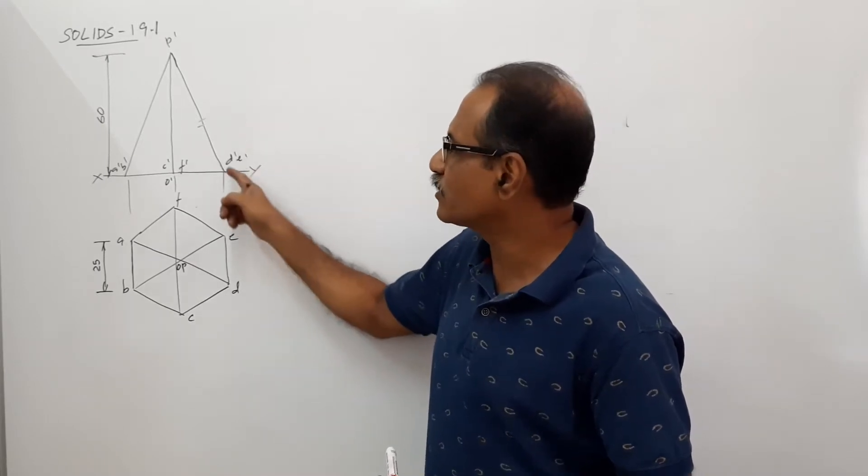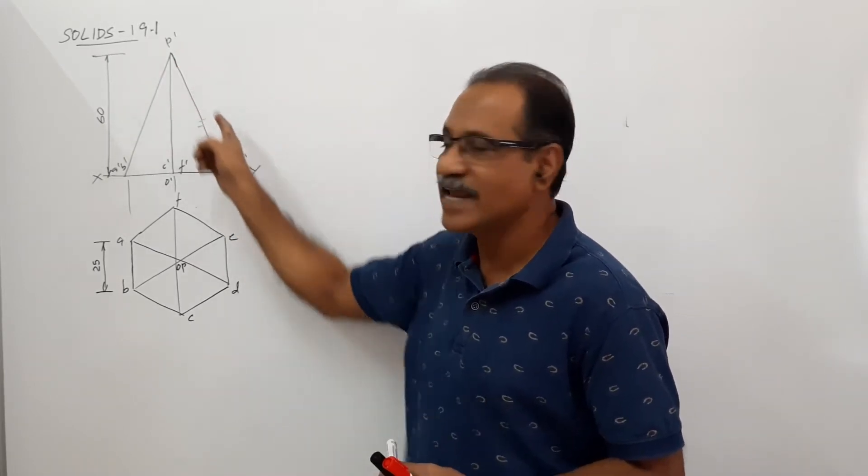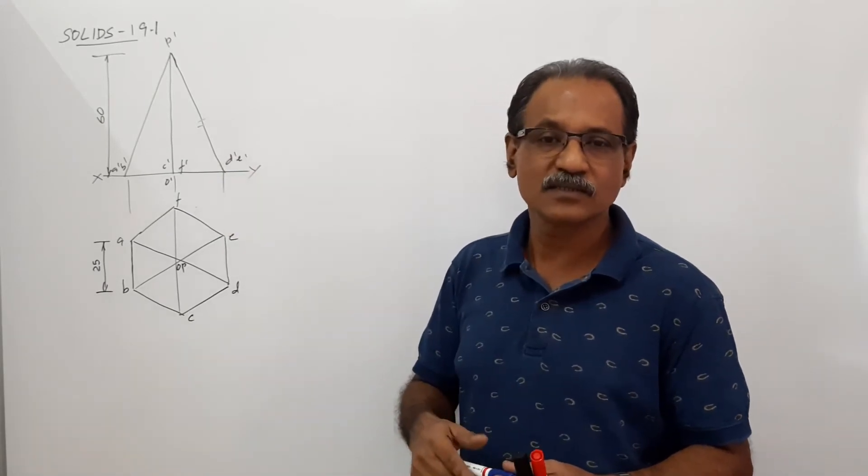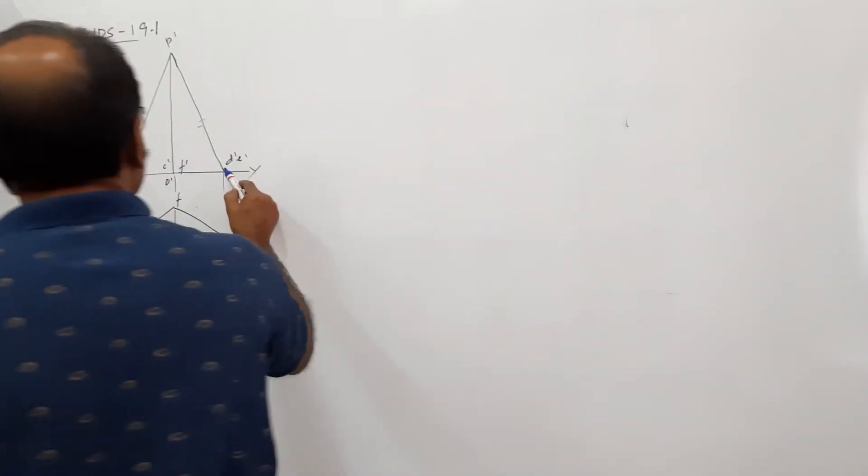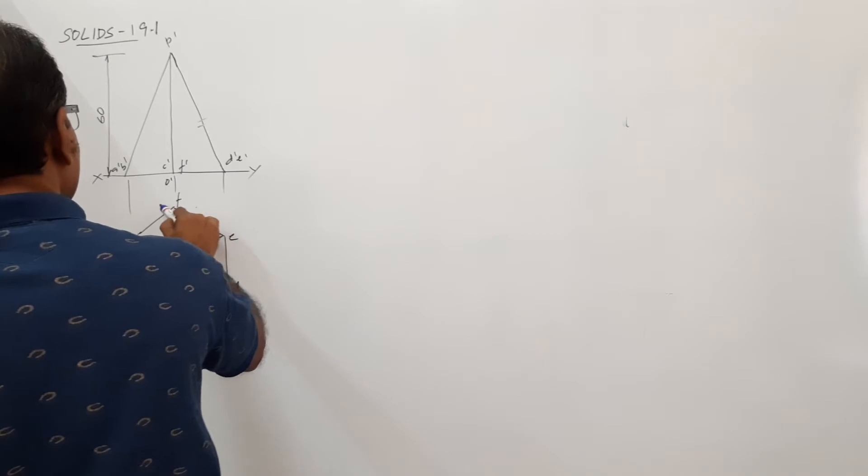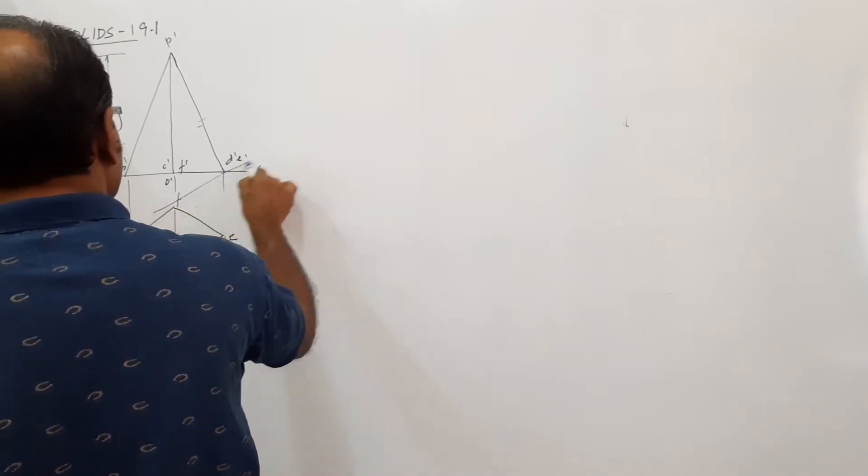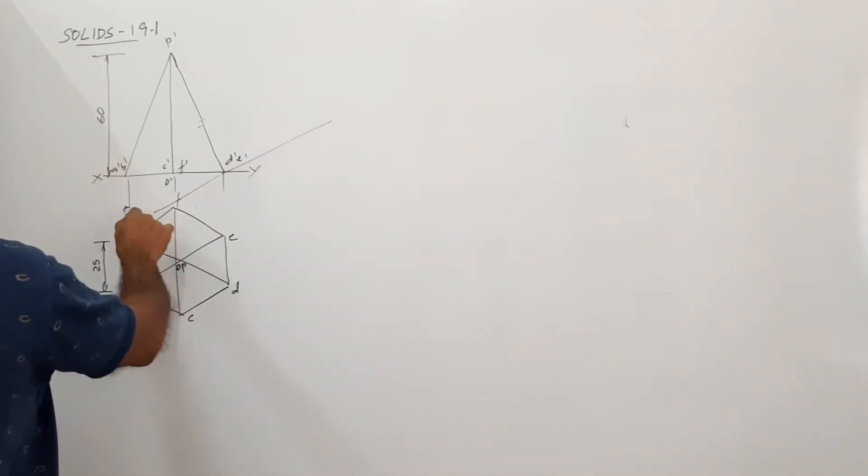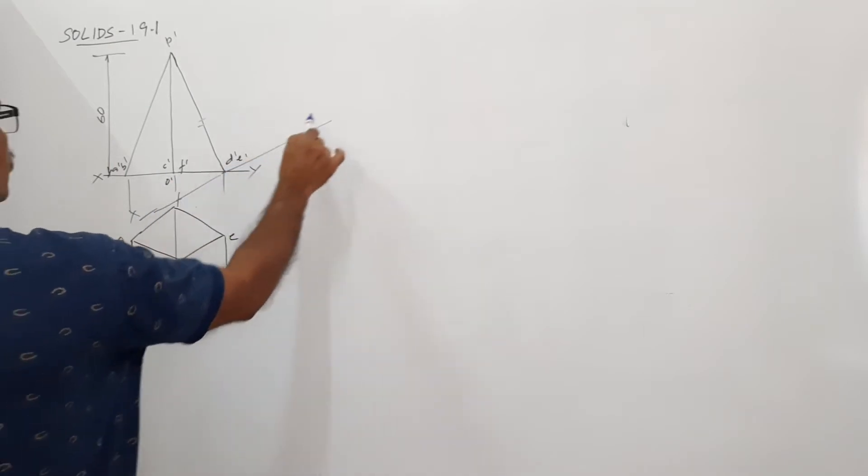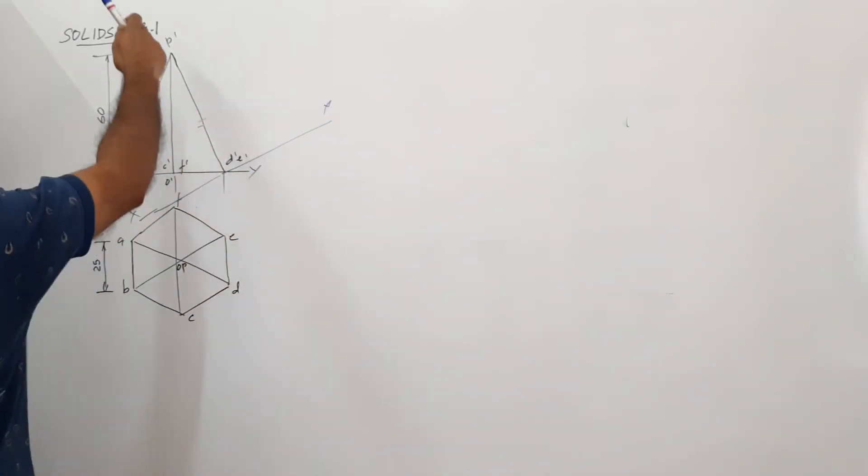So, the xy has to be drawn perpendicular to this P dash, D dash, E dash, that face. So, draw an x1, y1, through D dash, E dash, perpendicular to this line, P dash, D dash.